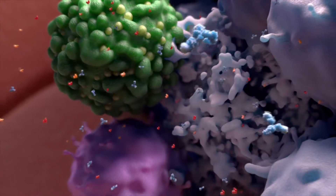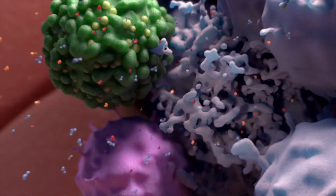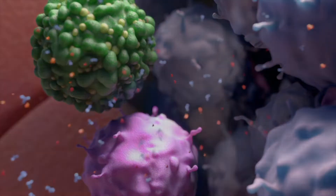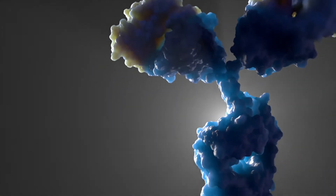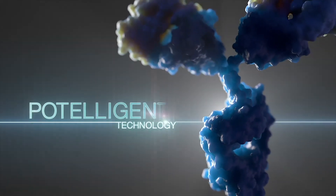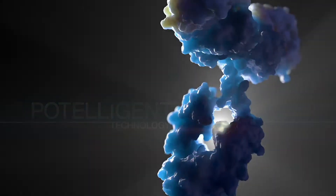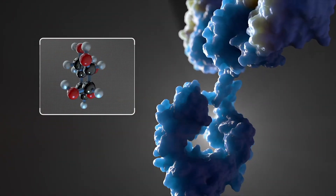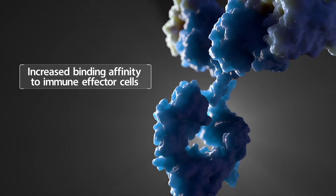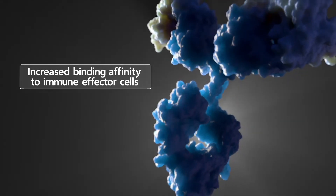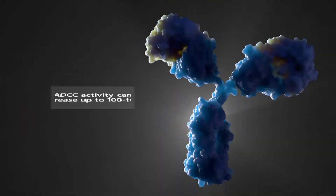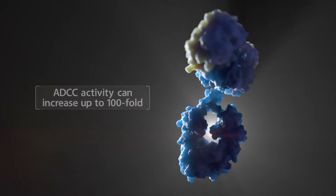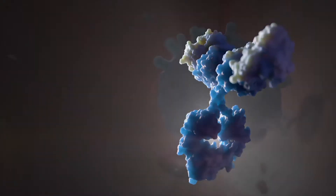Mogamulizumab has little impact on other cell types that express CCR4 such as platelets. It is engineered with proprietary potelegent technology that removes fucose from the antibody's Fc receptor region to increase binding affinity to immune effector cells. This can increase ADCC activity up to 100-fold compared with conventionally prepared antibodies.